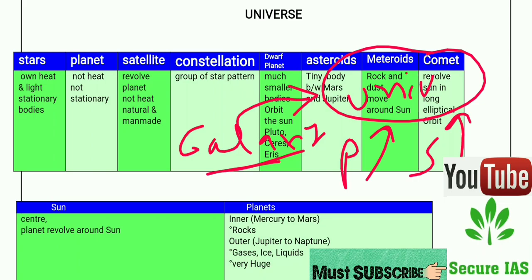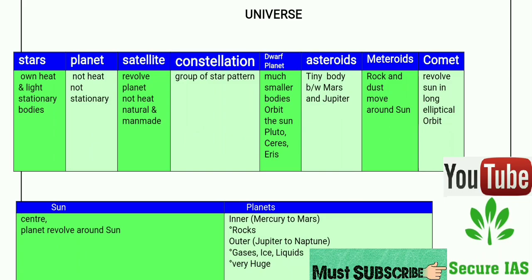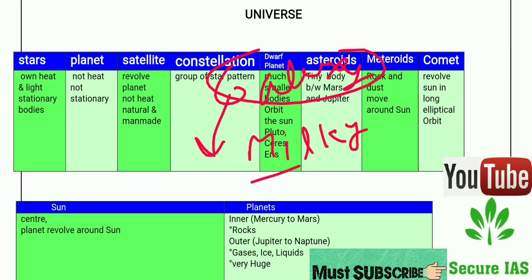A galaxy is a group of many stars with gas, dust, and dark matter. The word galaxy comes from the Greek word 'galaxia,' meaning milky — a reference to our own Milky Way galaxy. One important point: the expansion of the universe takes place between groups of galaxies, and not inside those groups.